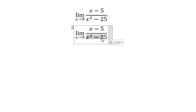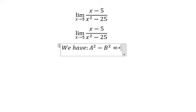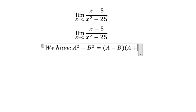x squared minus 25 - we can use this formula: a squared minus b squared equals (a minus b) multiplied by (a plus b).